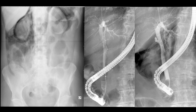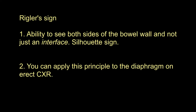In summary, Rigler's sign is the ability to see both sides of the bowel wall — gas within the lumen and gas outside the lumen make the bowel wall visible on both sides, not just as a single interface. It exploits the silhouette sign, which allows structures of different radiographic density to be seen separate from each other. You can also apply this principle to the diaphragm on the erect chest x-ray, and Rigler's sign can be applied to CT as well as plain films.